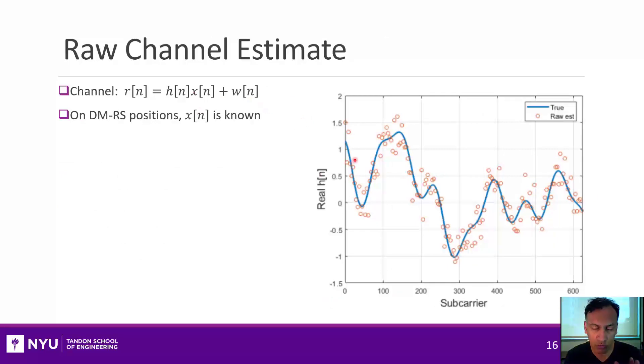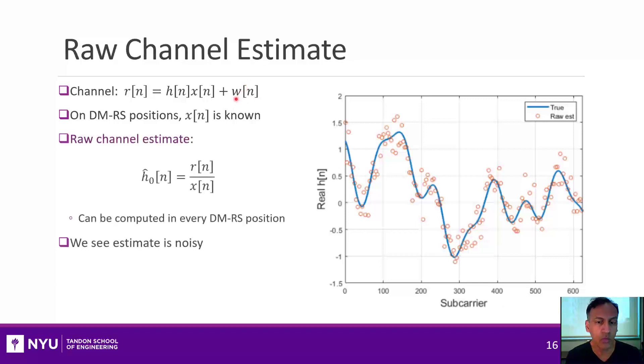So remember, we zoomed into one OFDM symbol. And in that one OFDM symbol, I have something that's just varying over frequency. So I'm going to call that r of n is what I receive. And this is the channel, which is what I want to learn. And I have this x of n, which is known at least on the DMRS positions. And they have some noise. So one simple idea is I could get what you would call a raw estimate. So on every subcarrier where I actually have a DMRS, I could just take the received value here and just divide it by x of n. And then that gives me an estimate if this noise is small for h of n. And I'm going to call this raw estimate h hat naught.